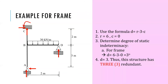We will also use r minus 3 minus c to determine the d for the frame. This frame has six support reactions, and there is no hinge in the system. In this case, we get d equal to 3 degrees. This indicates that this structure has three redundant forces.